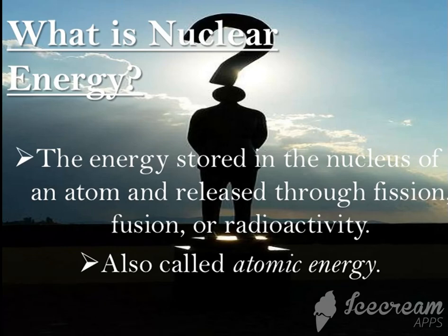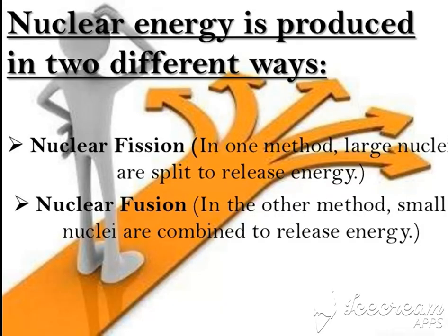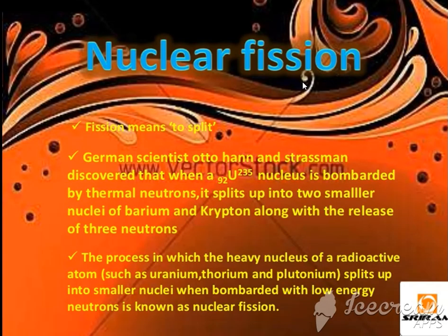Nuclear energy is produced in two different ways: the first method is nuclear fission and the second is nuclear fusion. In this video we are going to study about nuclear fission. The word fission means splitting.